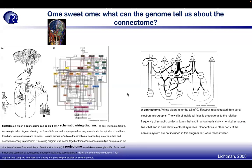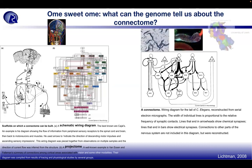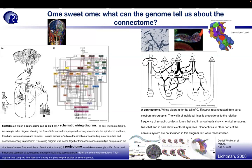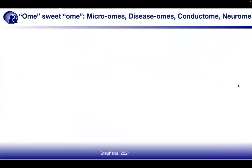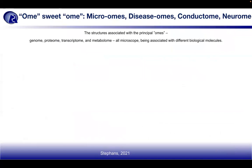An example of a connectome for C. elegans was reconstructed from serial electron micrographs, where line width is proportional to relative frequency of synaptic contacts. The brain of C. elegans was done by the University of Leeds, and the nervous system and neuronal support were published in Nature on August 4th, 2021. Looking at navigating the ohms: structures associated with principal ohms include the genome, proteome, transcriptome, and metabolome — all microscopic — being associated with different biological molecules.